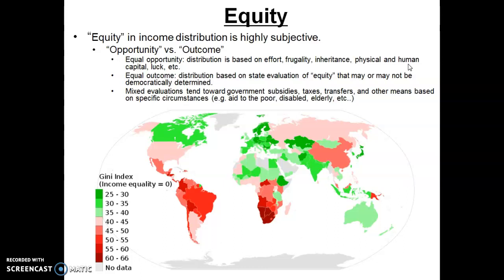In contrast, proponents of the equal outcome theory believe that distribution should be based on state intervention — even if you work hard or have natural talents, you should not be able to get a higher income than someone without those characteristics, and the state should ensure equal outcomes. For example, if you're a great singer or athlete under equal opportunity theory you'd earn more because people pay to see you perform, but under equal outcome theory that excess income would be redistributed away from you to others.